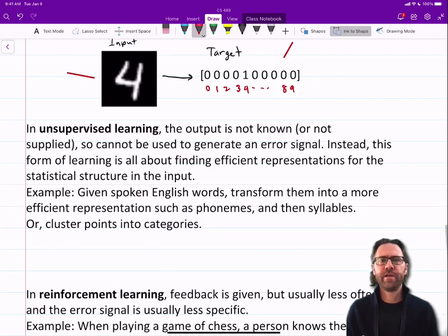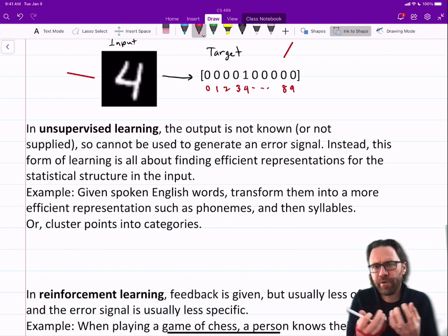In unsupervised learning, the output is not known or not supplied, so cannot be used to generate an error signal. Instead, this form of learning is all about finding efficient representations for the statistical structure in our input.